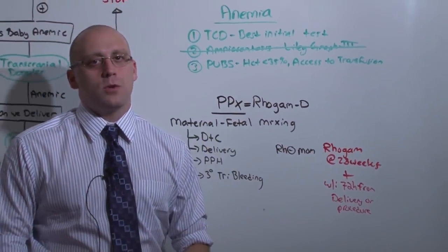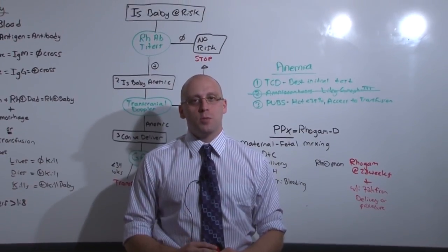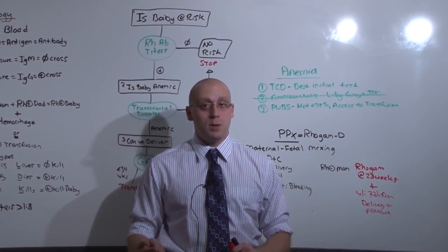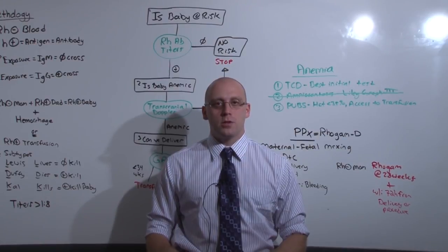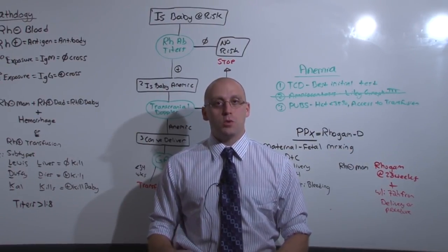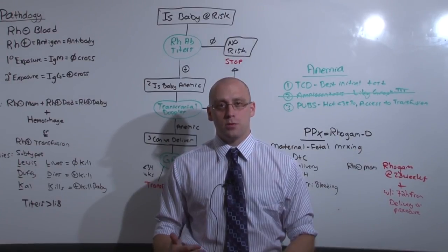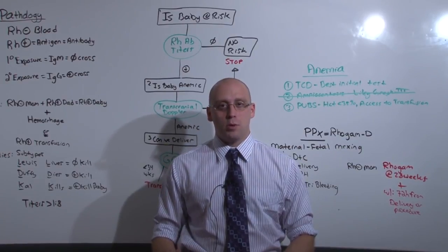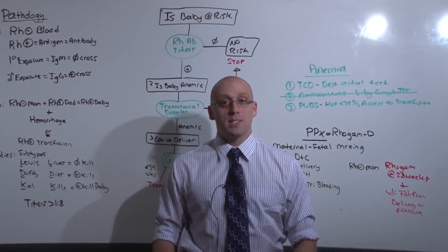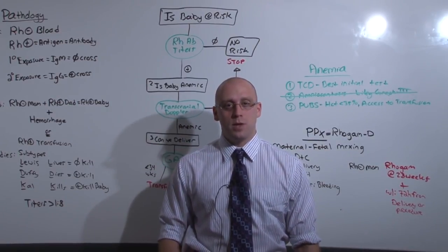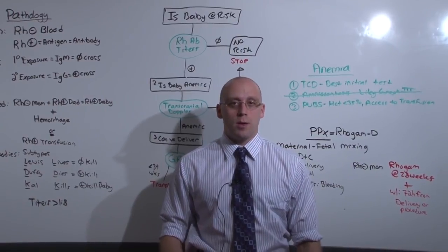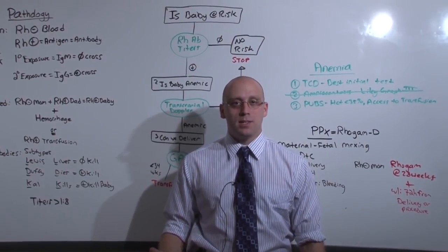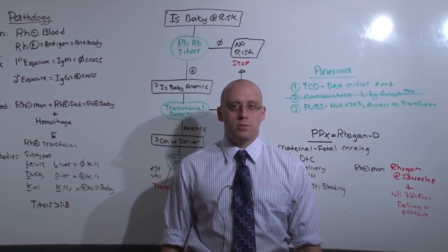And so what we talked about during this lecture is isoimmunization. And really what you have to be able to do is decide, is baby at risk? That is, is there the right maternal-paternal pairing? Is baby likely to be Rh positive? And are there enough titers to cause fetal anemia? If there are, you need to assess for fetal anemia, whether you're using the transcranial Doppler or amniocentesis or PUBS. Generally, repeat transcranial Doppler is the way to go. And if you need to transfuse, then use the PUBS because it's a dangerous procedure but gives you access to transfusion. And of course, the big question is when do you give RhoGAM? And if you take away any time mom was pregnant and is not pregnant anymore, RhoGAM is probably a good idea, so long as mom was Rh negative.